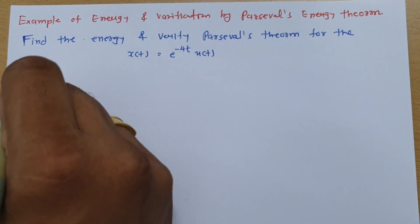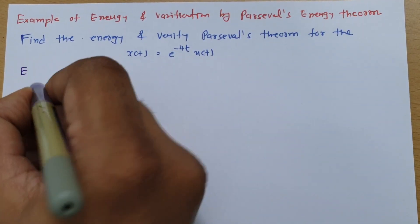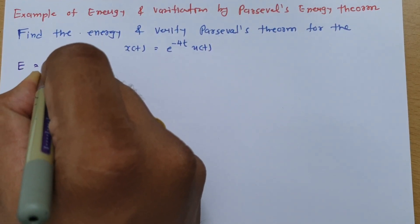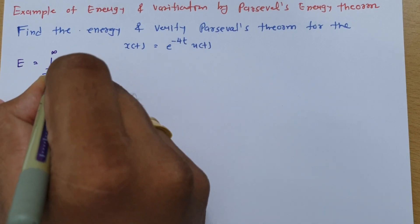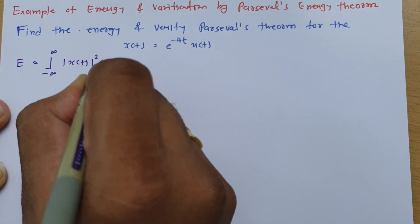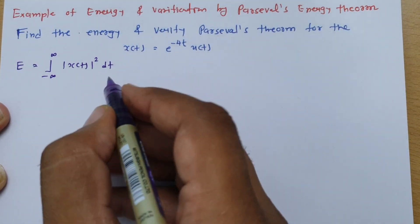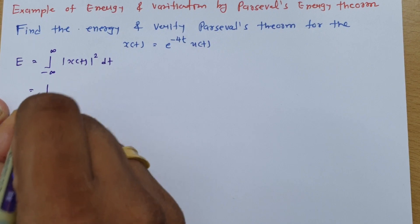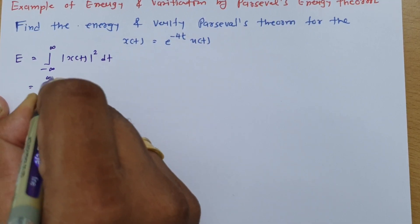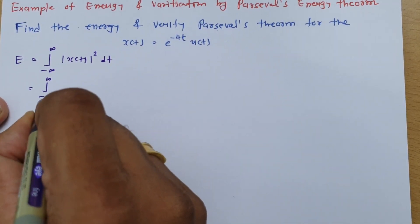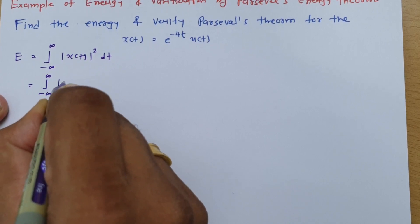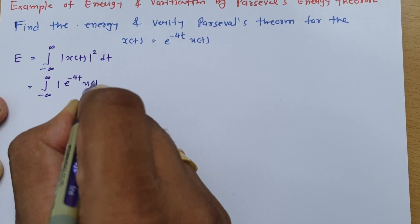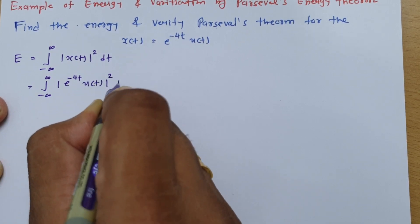The energy of x(t) can be calculated using the basic formula: integration from minus infinite to infinite of |x(t)|² dt. Placing x(t) into this formula, the energy becomes the integration from minus infinite to infinite of |e^(-4t) u(t)|² dt.